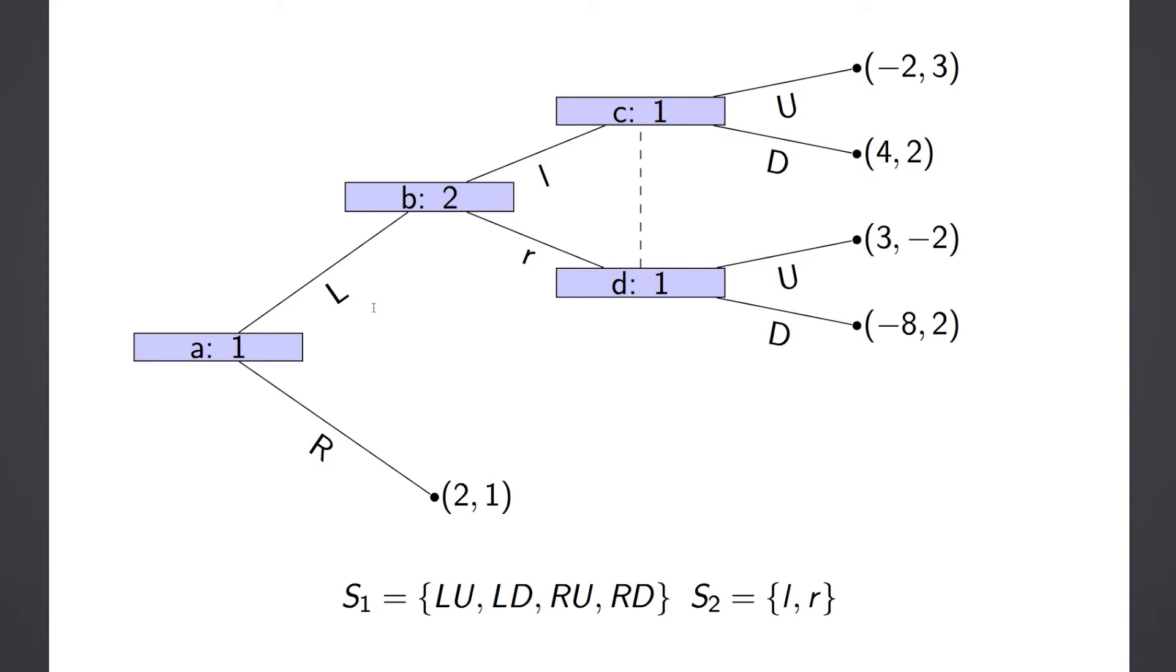So the strategy set for Player 1 is L and then U, L and then D. The other strategy for Player 1 is R and then U, R and then D. Even though you're not going to get there, you still need to say what you would do if you were there. So these strategies say what you'd do at any node.